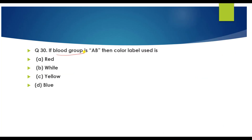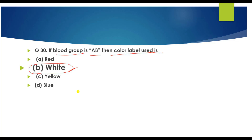Question number 30: If blood group is AB, which color label is used? The answer is white. In a blood bank, the polythene bag for AB blood group has a white color mark. This concludes Part 1. We hope these 30 jurisprudence questions are helpful. If you find this lecture useful, please share it with as many students as possible.